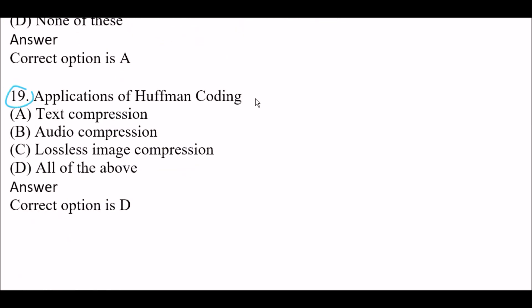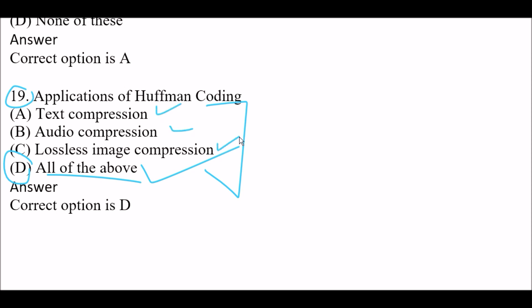Next question: Applications of Huffman coding — Option A: text compression. Option B: audio compression. Option C: lossless image compression. Option D: all of the above. The right answer is Option D, all of the above. They are all applications of Huffman coding, including text compression, audio compression, and lossless image compression.